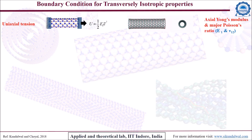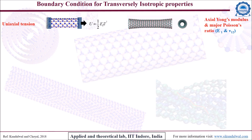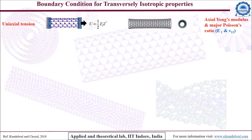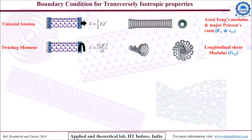In case of uniaxial tension, the BNNT's bottom end in the axial direction was fully constrained, while at the top end a constant speed was applied to simulate an incremental displacement. Young's modulus of a BNNT was calculated from the initial slope of the stress-strain curve and the deformation-energy density elastic constant relation.